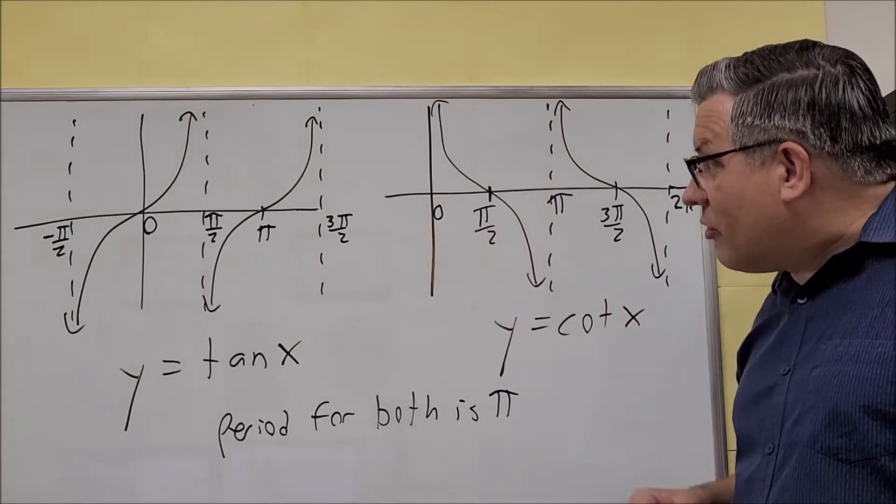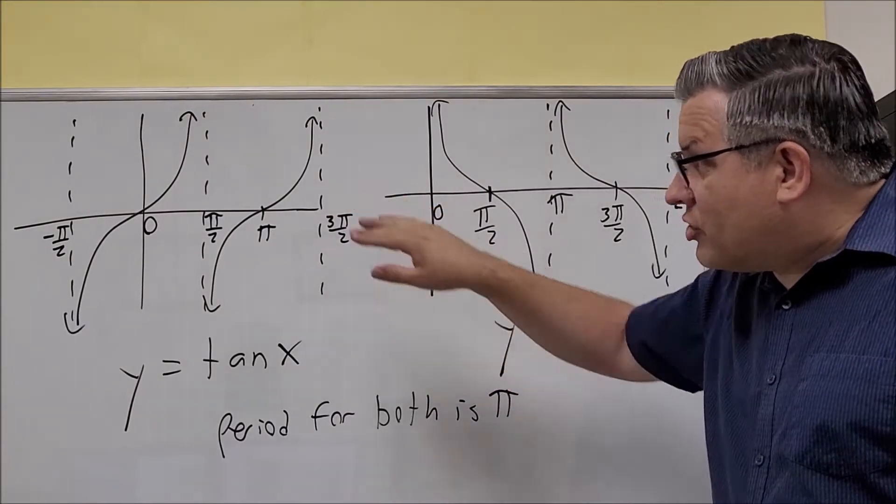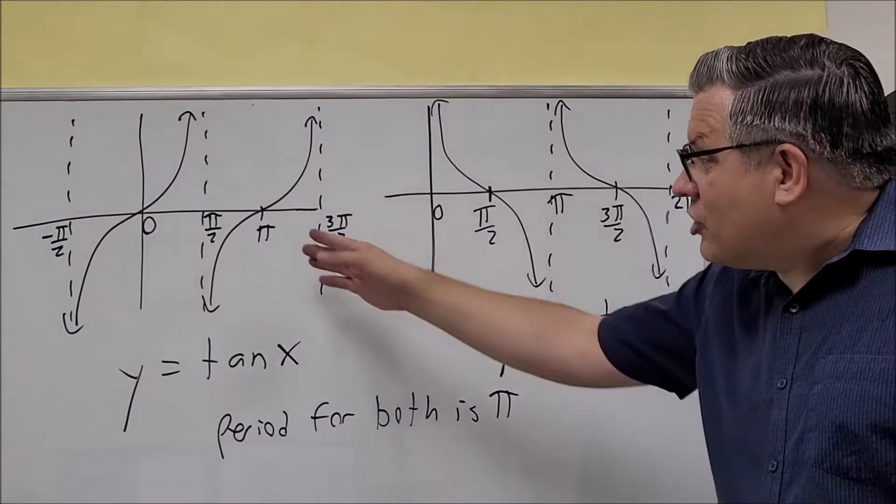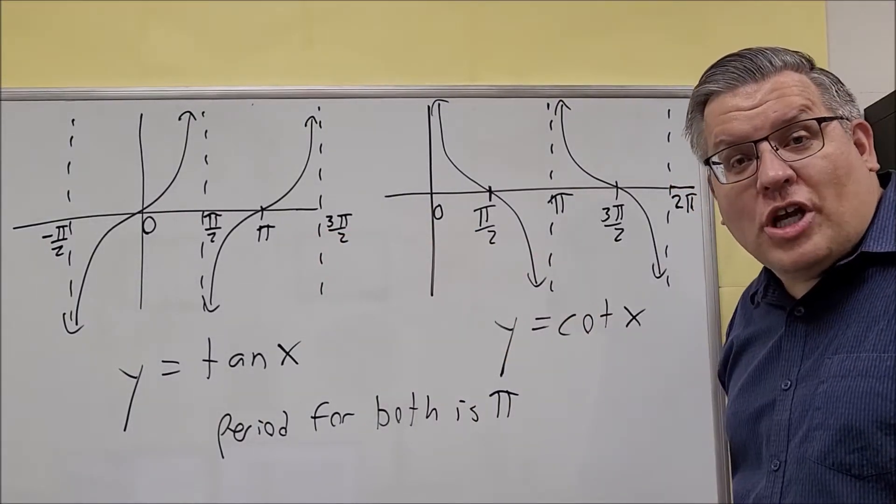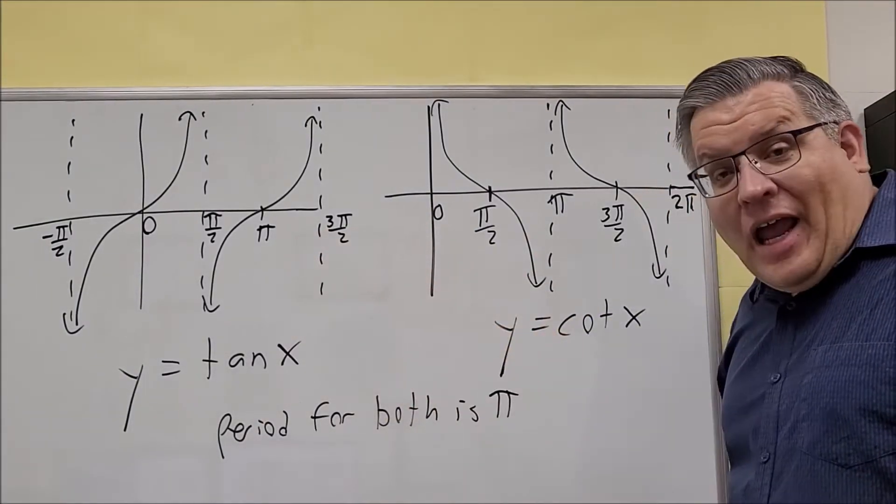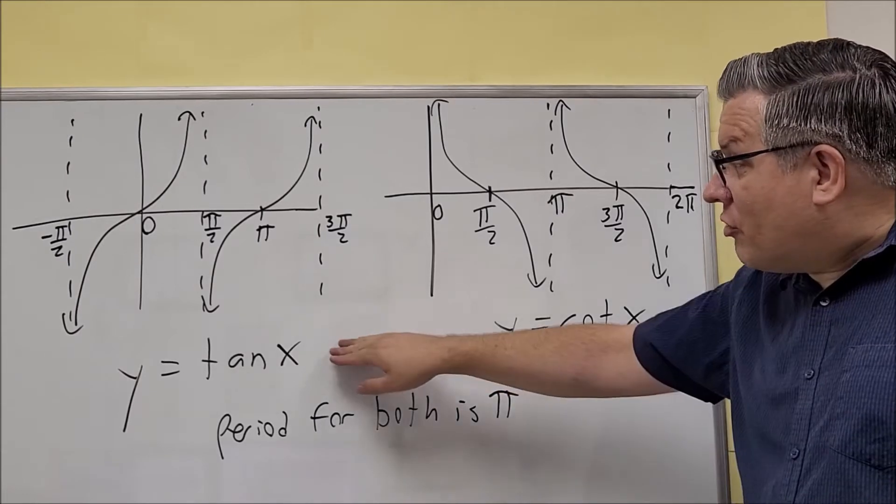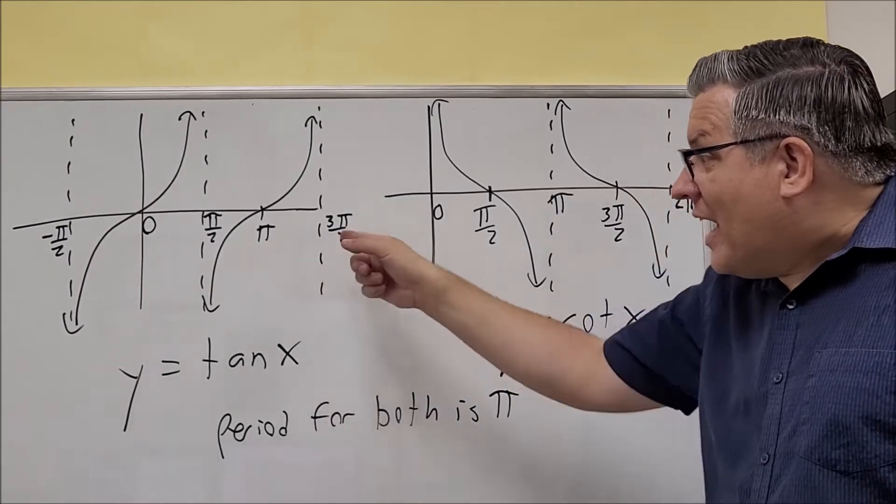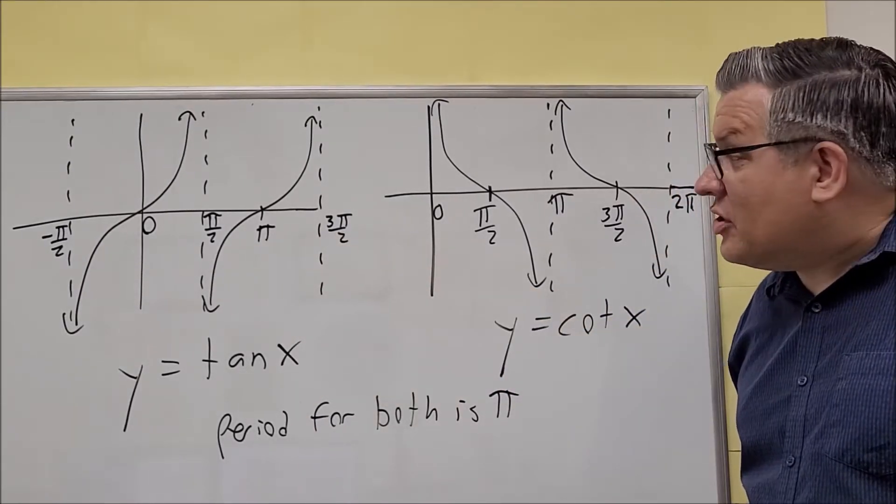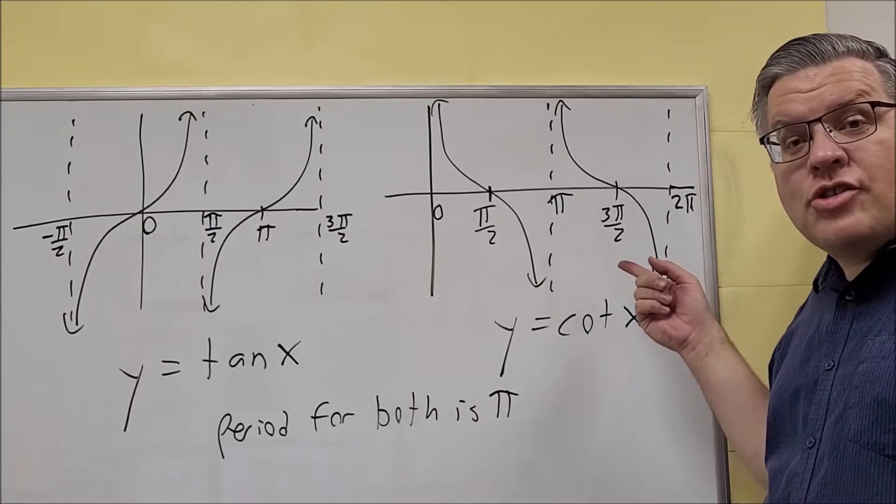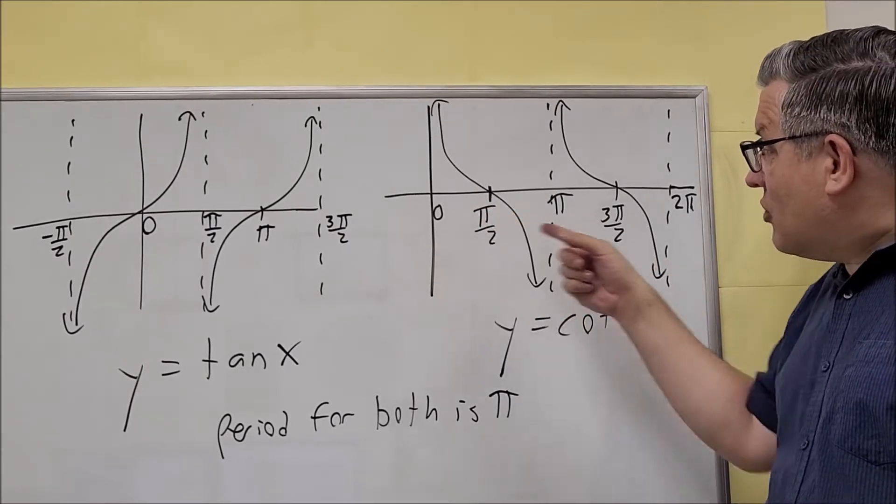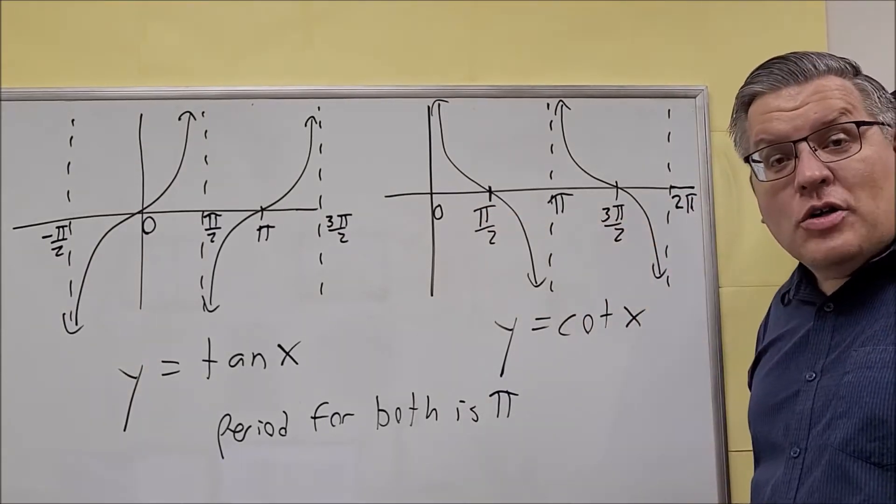They're different because these graphs have a different type of shape. As you see, the shape resembles more of a cube shape. So these have asymptotes. The tangent graph has asymptotes on the half pi's, as you can see there, where the cotangent graph has asymptotes on the whole values of pi.